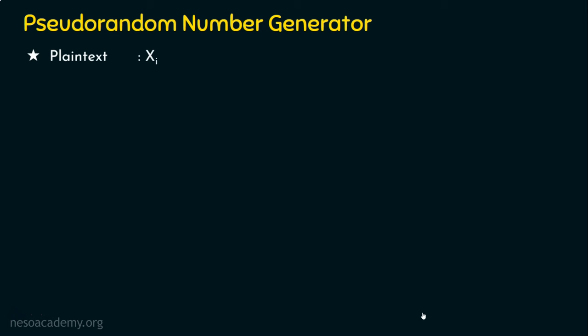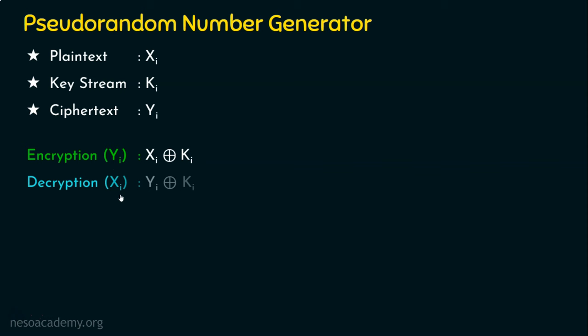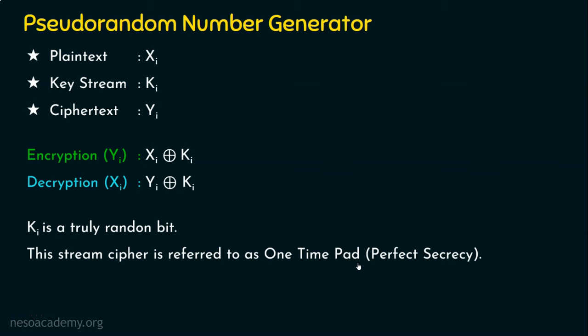Theoretically, the plaintext bit Xi is XORed with keystream bit Ki to generate ciphertext bit Yi for encryption. For decryption, Xi is recovered by XORing Yi with Ki. When this keystream is non-repeatable, Ki is a truly random bit. When we have such a truly random sequence in our algorithm, this stream cipher is referred to as a one-time pad, which achieves perfect secrecy — Shannon's notion of perfect secrecy from Chapter 1. In reality, we must understand whether what we generate is truly random or pseudo-random.